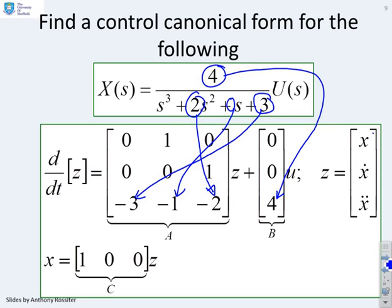And I'm extracting x, which is the top element of the state-space vector. And therefore, I've got a 1 in the first column of c. So basically, with this transfer function, I've used results that I already know in order to give the answer by inspection.